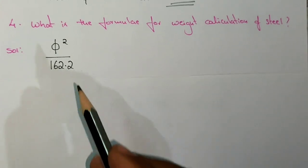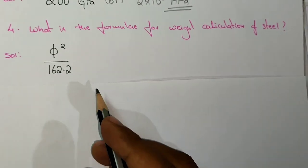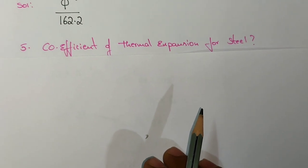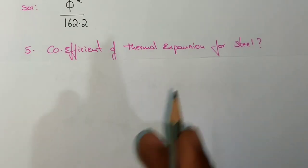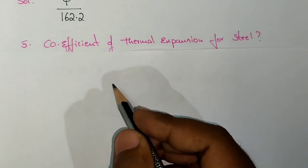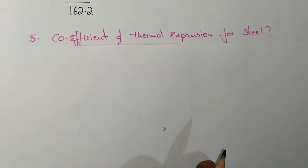The final question is: what is the coefficient of thermal expansion for steel? The coefficient of thermal expansion for steel is 12×10^-6 per degree centigrade.